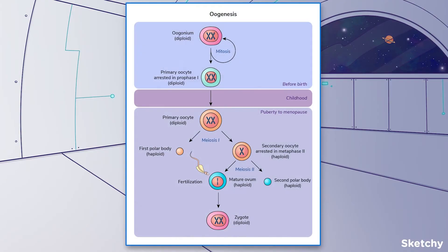Oogenesis is the process where mature female gametes, or ova, are made from germ cells. Oogenesis occurs in the outermost layers of the ovaries and, unlike spermatogenesis, begins before birth.